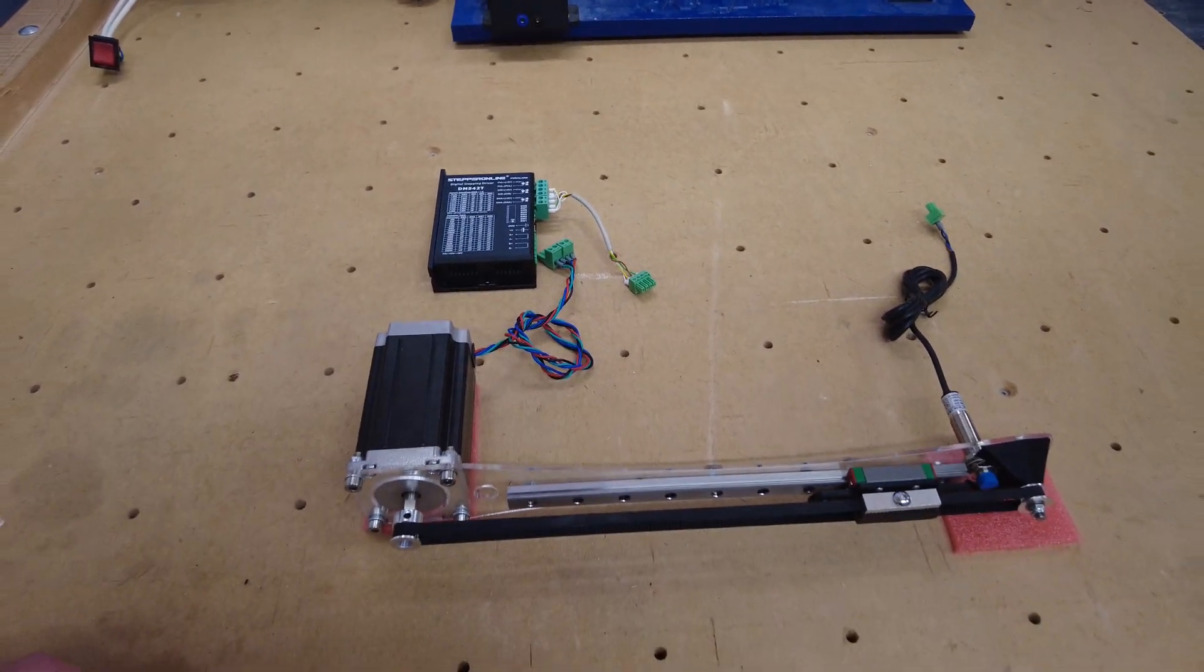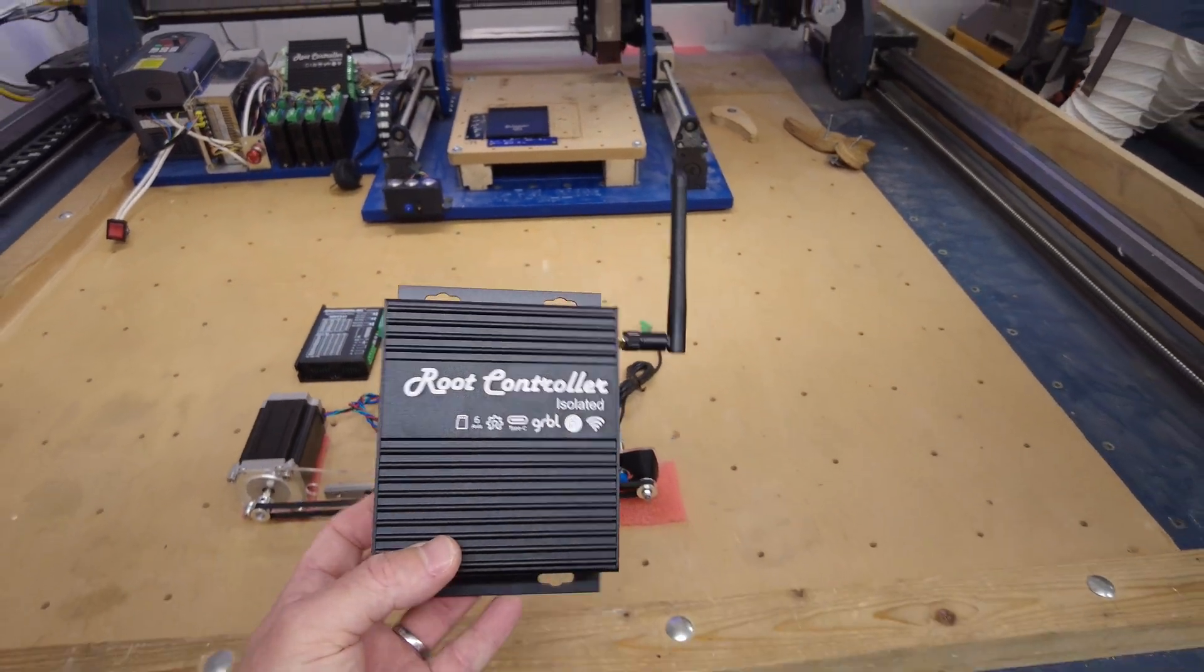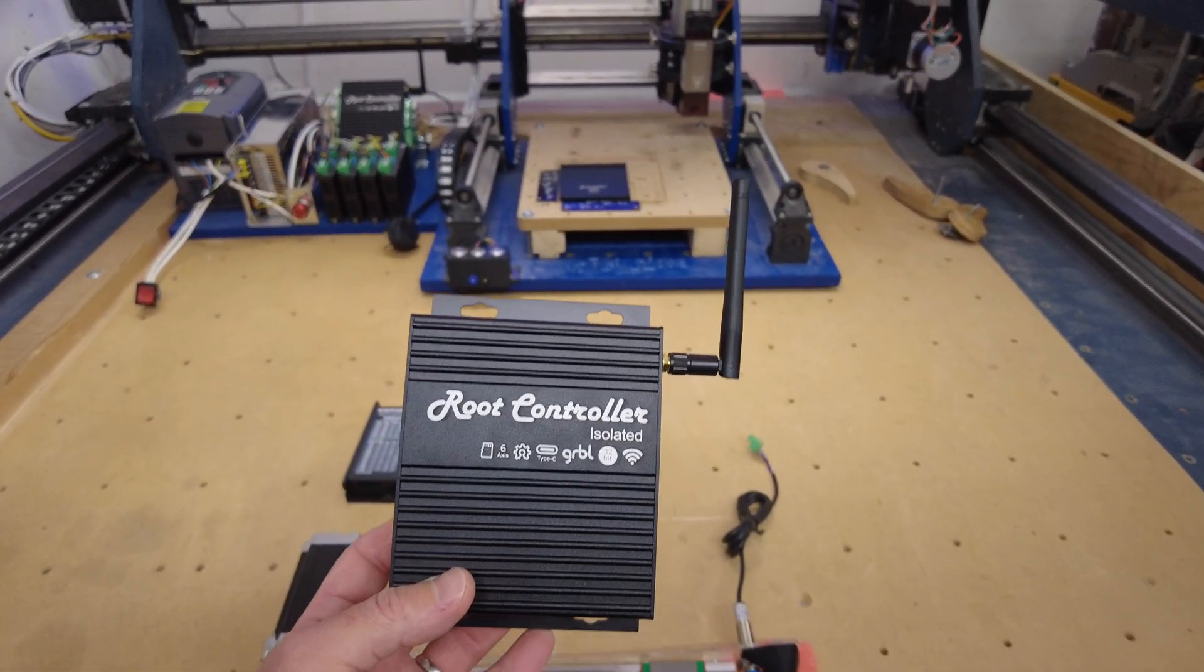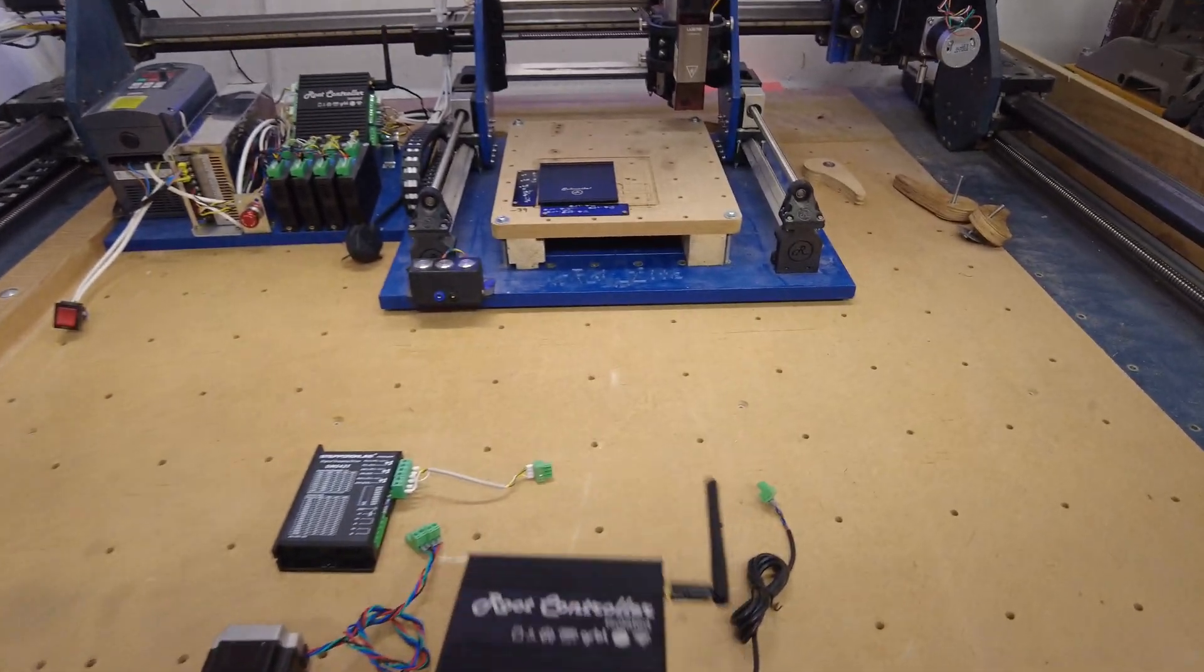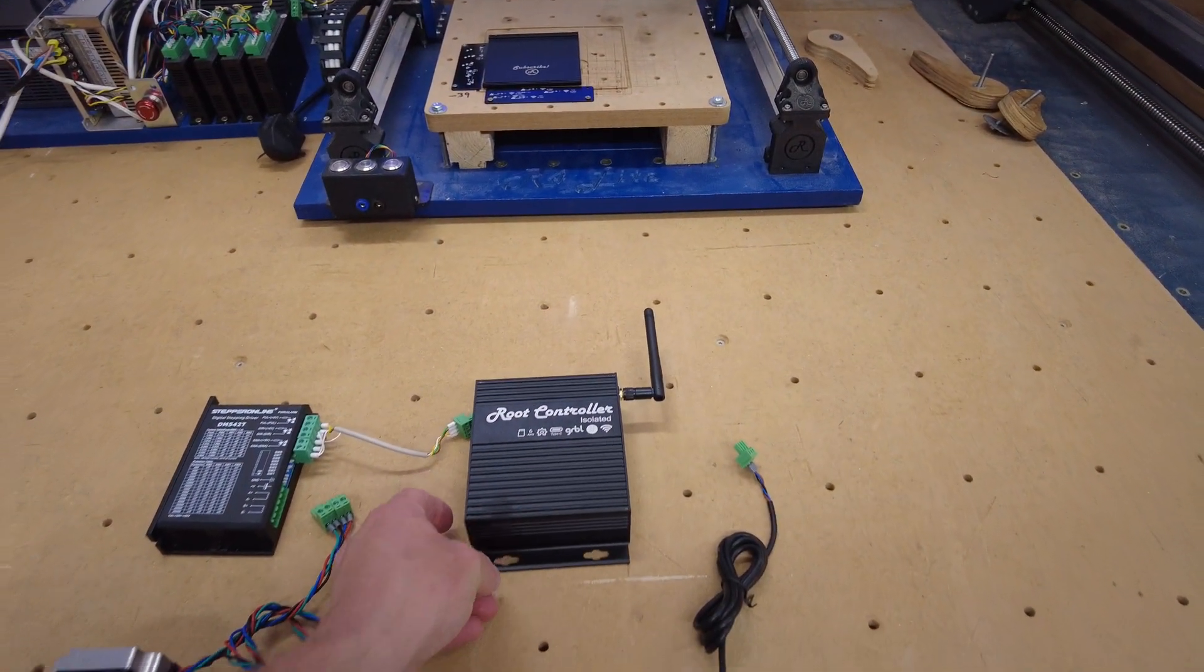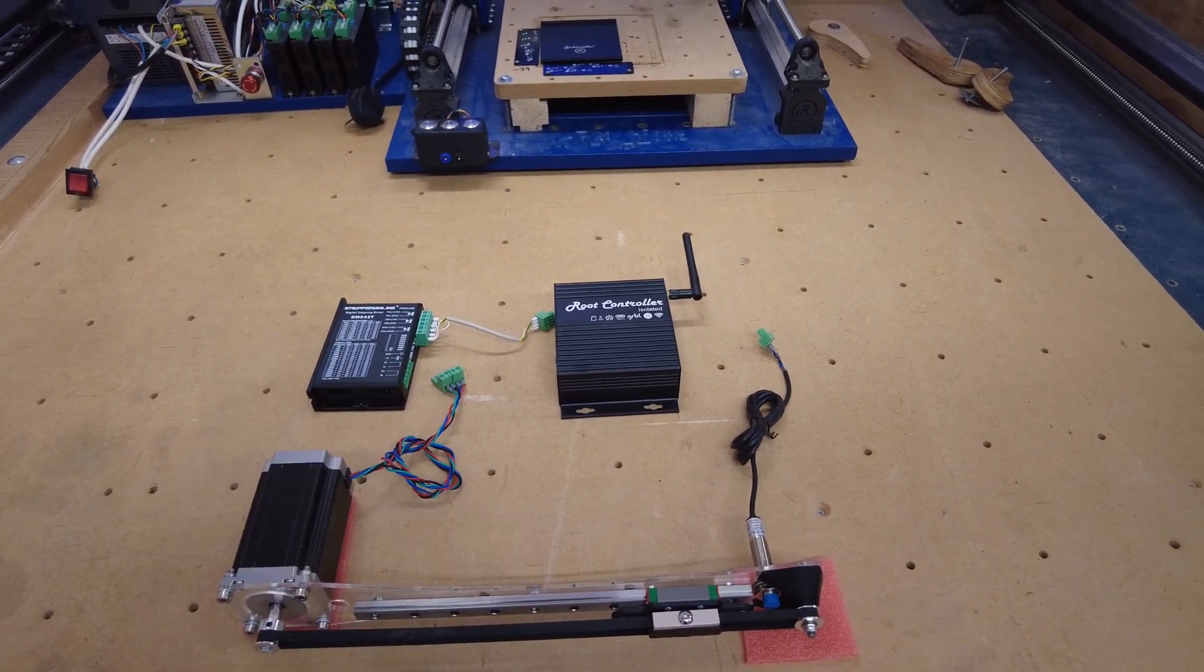The next part of the puzzle is the motion controller. In this case we're using the Root Controller Isolated - a brilliant six-axis fully isolated motion controller, naturally part of Route CNC.